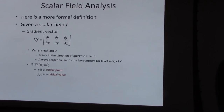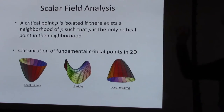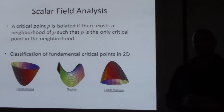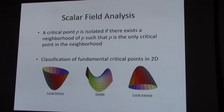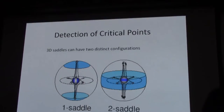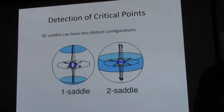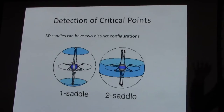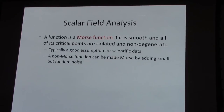At a local minimum, you can only always go up. At a saddle, you can go up or down. At a local maximum, you can only go down. Classification of these critical points is the most fundamental way of analyzing data in scalar fields — and in fact in vector field and tensor field analysis. It's an intrinsic way of decomposing the dataset into features that matter. The big difference going from 2D to 3D scalar fields is that in 3D you no longer have just one type of saddle; you have two types — one-saddles and two-saddles.